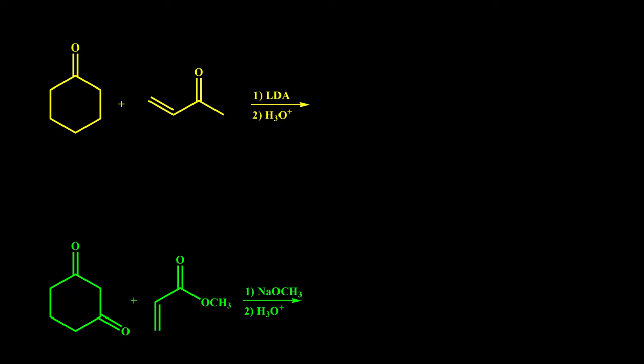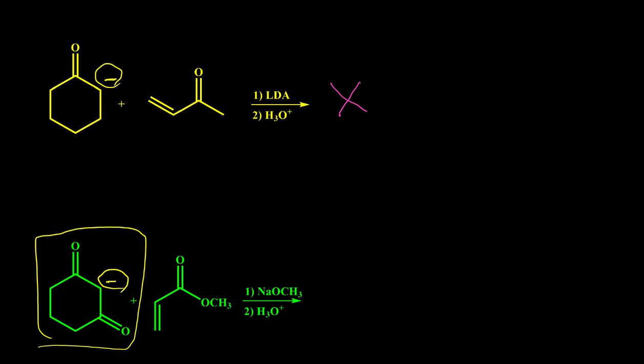The second nucleophile type is the enolate. Enolates can act as Michael donors and react with Michael acceptors. However, enolates from simple carbonyl compounds normally don't perform Michael addition — only highly stable enolate ions can perform Michael reaction. When we have a negative charge between two carbonyl groups, or between a carbonyl group and another electron-withdrawing group, then we can have Michael reaction. These types of compounds are called Michael donors.